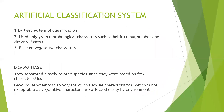Talking about the artificial classification system, it was the earliest system of classification and it used only gross morphological characters like habit, color, number, and shape of leaves. It was also based on vegetative characters. The biggest disadvantage was that it separated closely related species because it was based on only a few characteristics, and it gave equal weightage to vegetative as well as sexual characters. We know today that vegetative characters are easily affected by the environment.